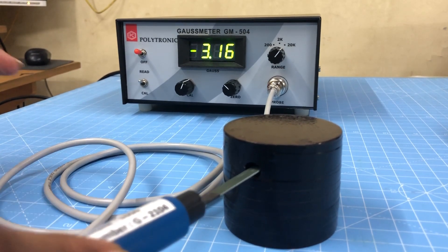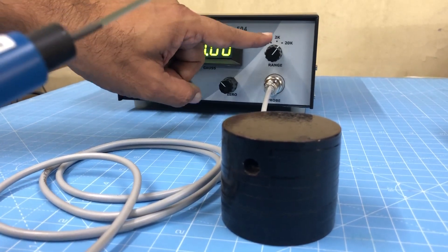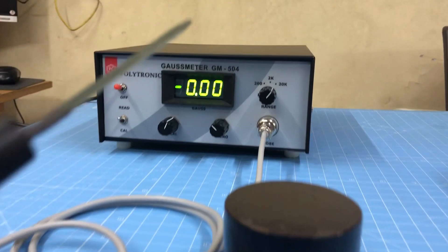The standard reference magnet has a value of 3.29 kilogauss on the 20 kilogauss range.